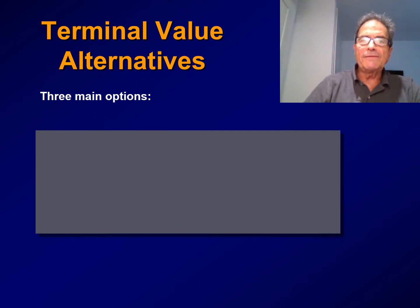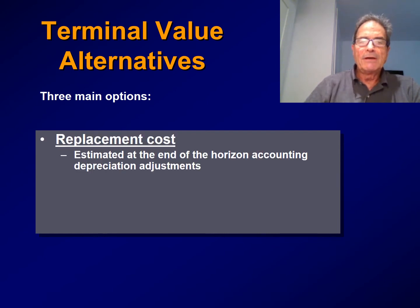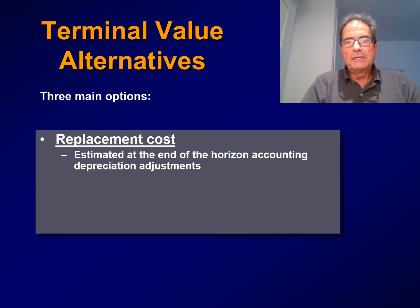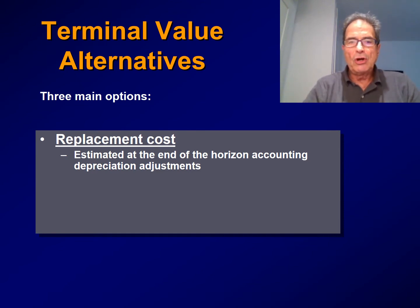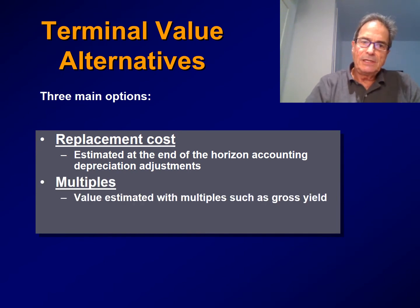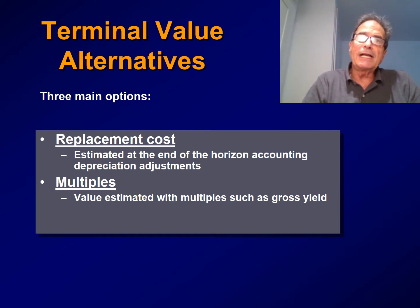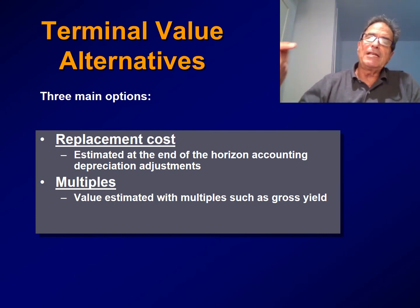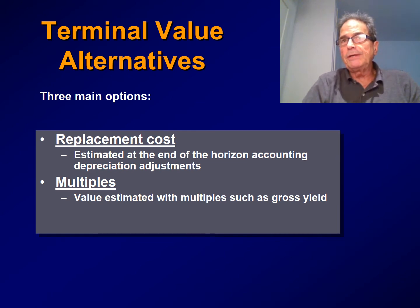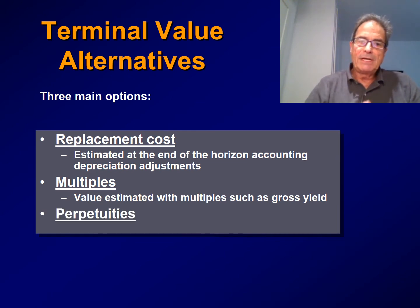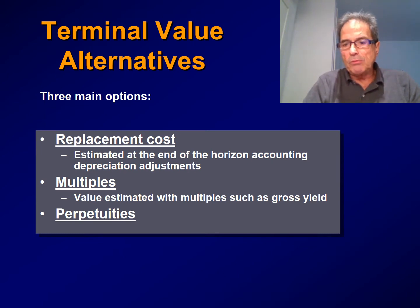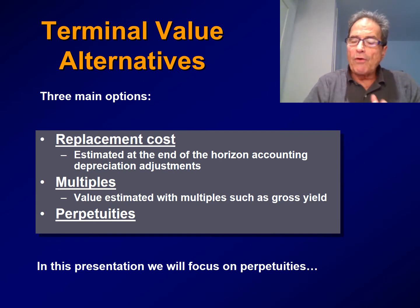There are basically three alternatives to quantify the terminal value of a real estate commercial property. First, replacement cost — the replacement cost of the property is estimated at the end of the horizon, taking into account the accumulated depreciation over the period. Second, multiples, usually the gross yield — the value of the property at the last year of the projection is estimated as the gross potential income in the first year of the perpetuity multiplied by the gross yield. And the third method is perpetuities, which is actually the most common. In this presentation, we will focus on perpetuities.